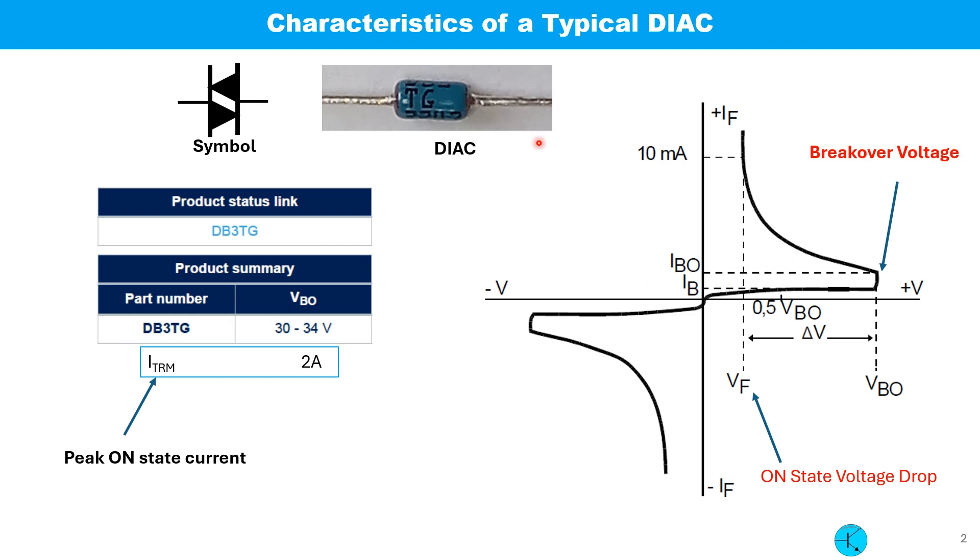A DIAC looks like a semiconductor diode but its characteristics are very different from that of a rectifier diode. If we increase the voltage across it, initially the current will be very low in nano-ampere or micro-ampere range. When the voltage reaches a certain value, suddenly the current goes very high. The voltage is called breakover voltage. Another important feature we need to know to protect the device is the peak on-state current, which is 2A for the DIAC I used.